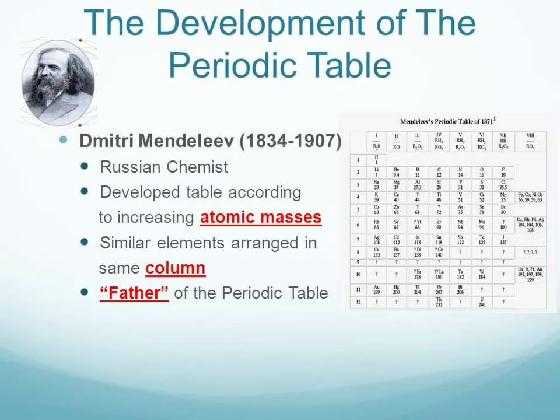The development of the periodic table is credited to Mendeleev, a Russian chemist, who developed a table according to increasing atomic masses. Similar elements are arranged in the same column.